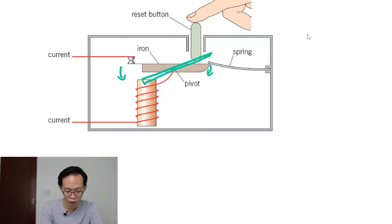And when this happens, obviously these contacts here will separate. And once these contacts are separated, then your circuit is broken. Your excessively large current is stopped. So then no more hazard.